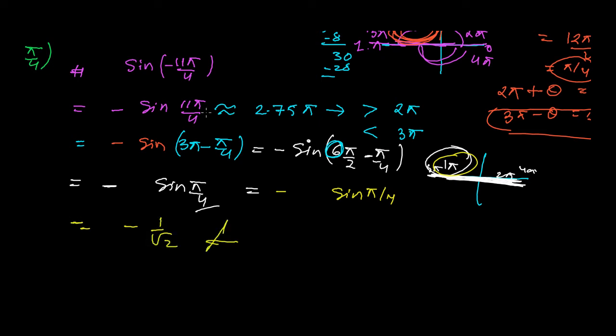So the value of sin(−11π/4) is −1/√2. If you have any confusion or questions, please feel free to comment below and I will get back to you. See you in the next video, goodbye.